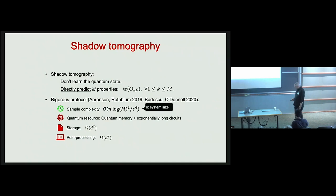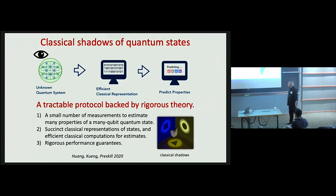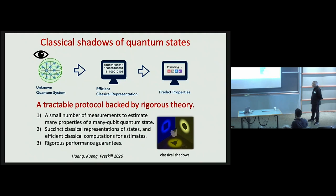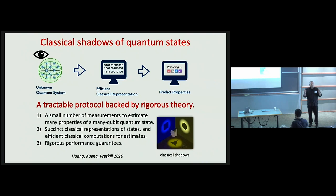In the last couple of years we've been developing the idea of classical shadows of quantum states, especially with my amazing collaborators Robert Huang and Richard Kuhn. Classical shadows, though not as powerful as full-blown shadow tomography, are far more practical. With a relatively small number of experimentally feasible measurements we can learn a succinct classical description of a many-qubit quantum state, and then using efficient classical processing use that description to predict a large number of properties. We have rigorous guarantees that our predictions are accurate with high probability.